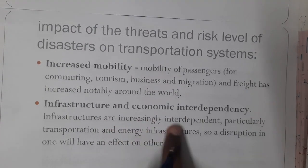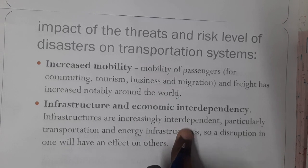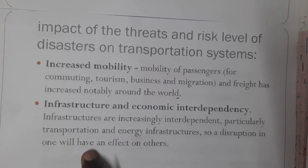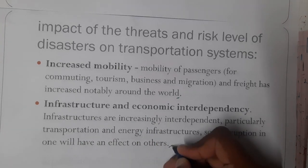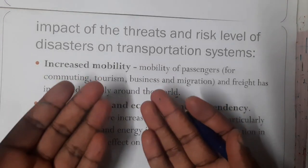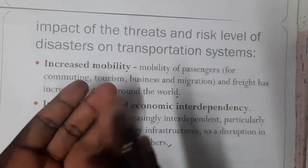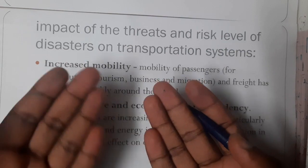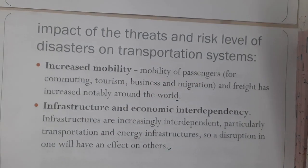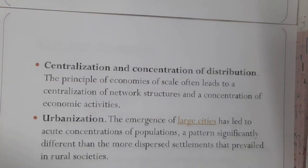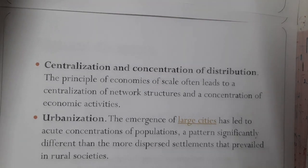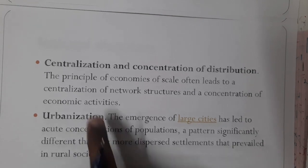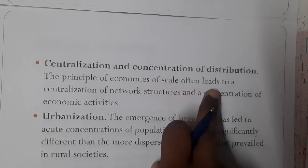Similarly, infrastructure and economic interdependency: infrastructures are increasingly interdependent, particularly transportation and engineering infrastructures, so a disturbance in one will have an effect on another. Even in transportation or any sector, one is dependent on another directly or indirectly — if something happens to one sector, it will also affect the others. Similarly, centralization and concentration of distribution: the principles of economy of scale often lead to the centralization of network structure and a concentration of economic activities.